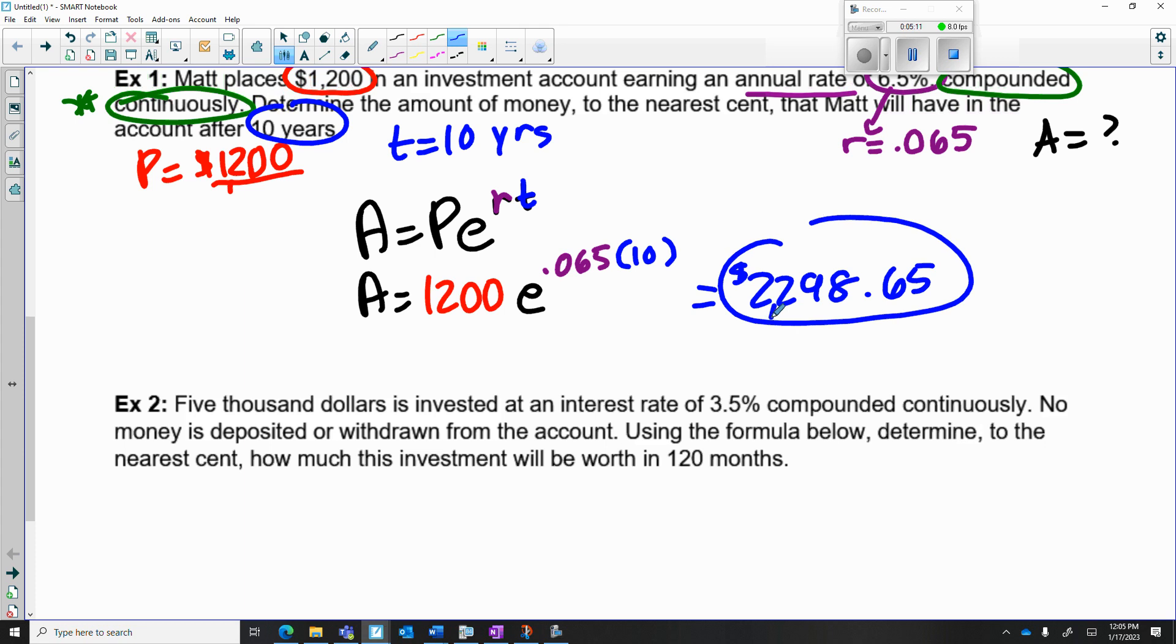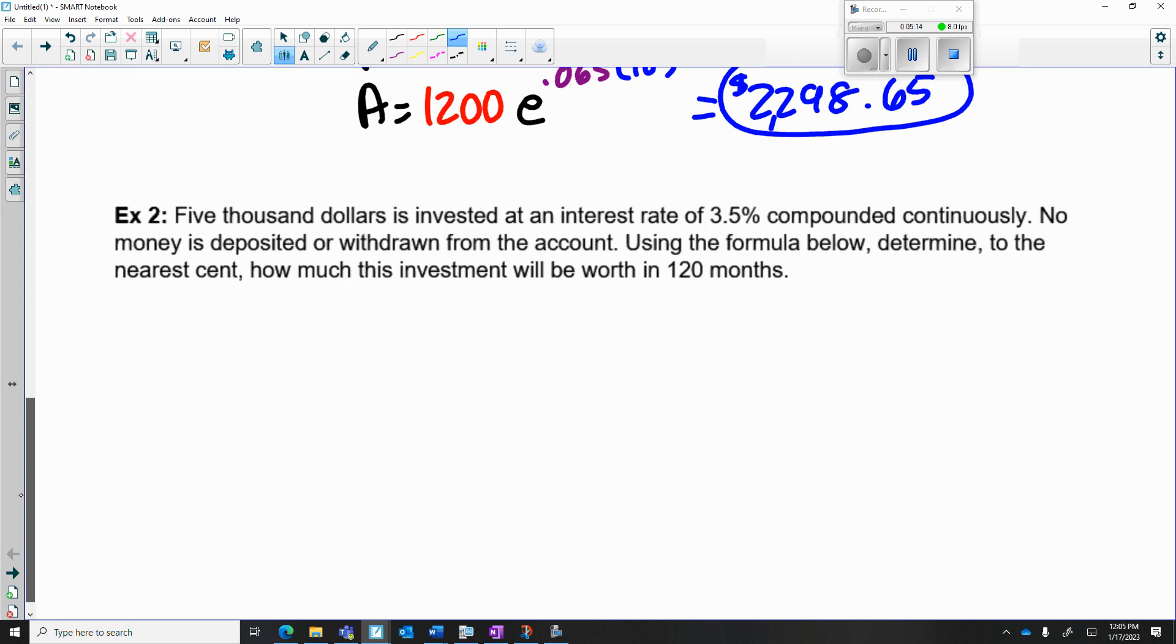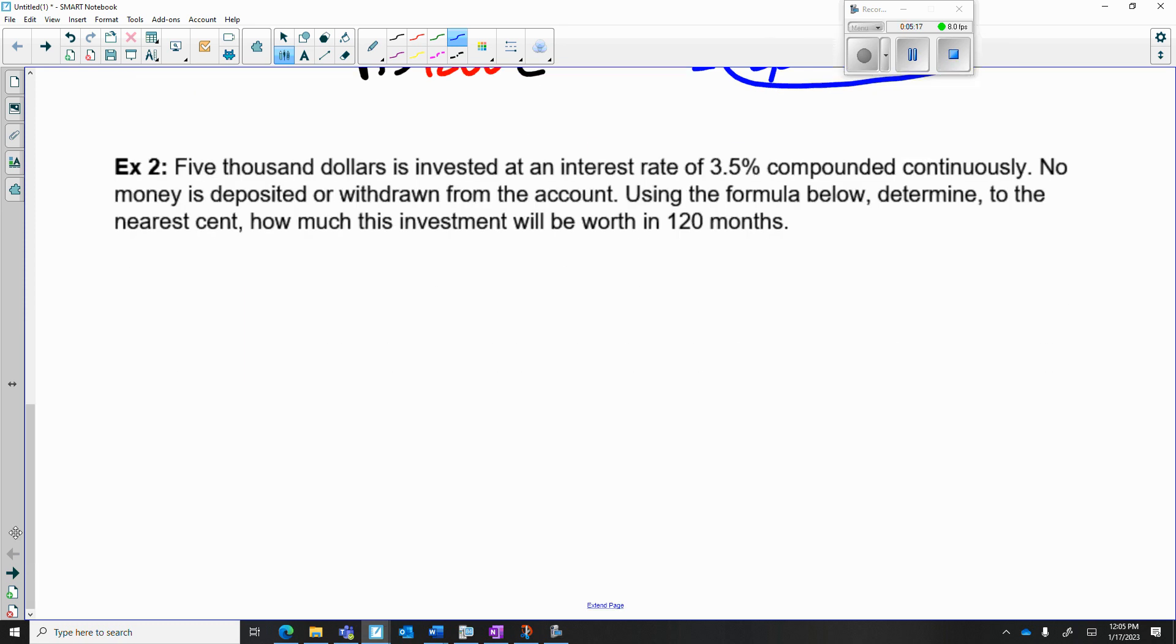Next one, number two. $5000 is invested in the bank, that's the principal amount. Interest rate 0.035, that's the rate. Notice here it says compounded continuously, so I'll highlight that. That means you're going to use your e formula. No money deposited or withdrawn. Using the formula above, determine to the nearest cent how much this investment will be worth in 120 months.